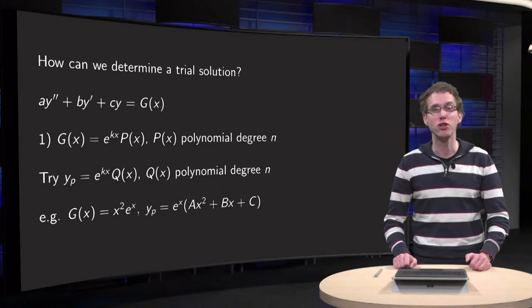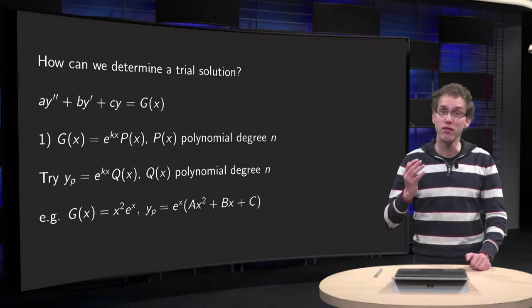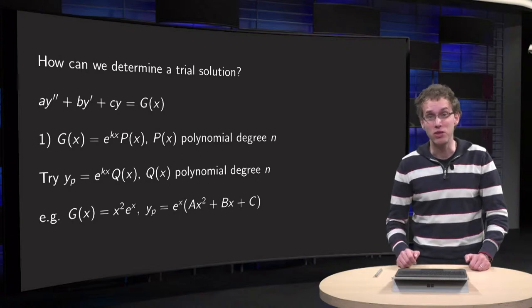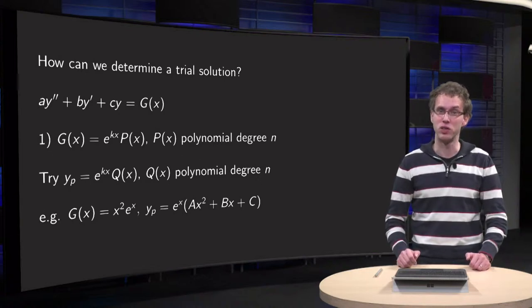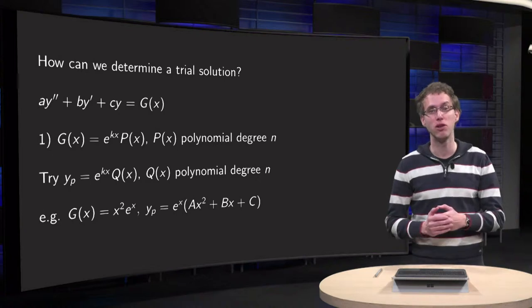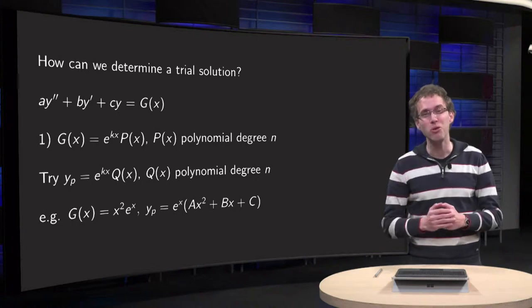You need to make a smart choice for your trial solution if you want to find a particular solution for your second-order linear differential equation using the method of undetermined coefficients. But how do you make this choice?